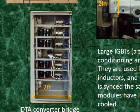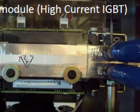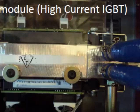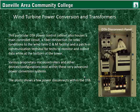This DTA is a very large cabinet. The converter bridge is used in conjunction with internal transformers, inductors, and capacitors to ensure the power produced is synced at the same frequency as the grid. The modules have losses in the form of heat and are water cooled — it's similar to a heat sink within an amplifier or a radiator in an automobile. This particular DTA power control cabinet also houses a main controller circuit, a fiber connection to relay turbine conditions to the wind farm O&M facility, and a patch-in communication terminal for techs to monitor and collect data while at the bottom of the tower.